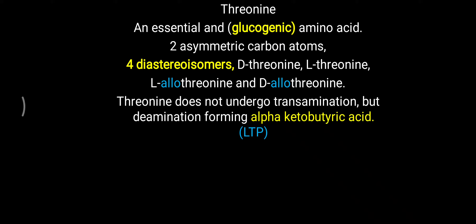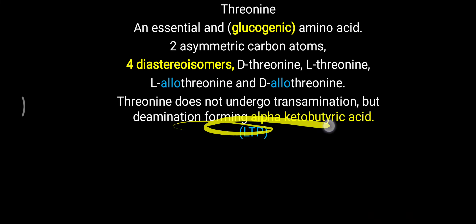Further, threonine does not undergo the transamination reaction. Most amino acids undergo transamination, which is the most important reaction for amino acids. But threonine does not undergo transamination; instead it undergoes deamination, and that leads to the formation of alpha-ketobutyric acid.